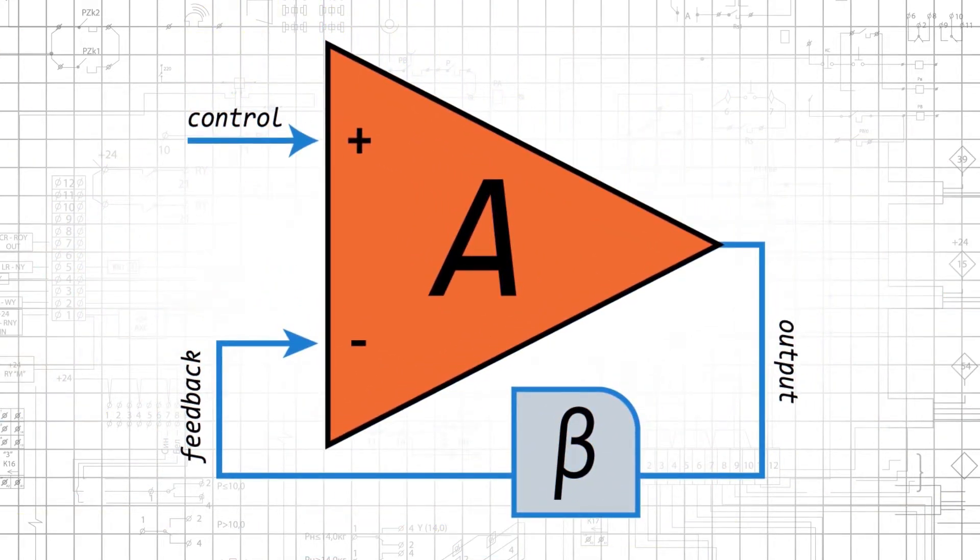Op-amps make it very easy for us to create high-performance negative feedback amplifier systems. Subtraction is achieved by connecting the feedback signal to the inverting input terminal, and the op-amp's extremely high gain allows us to use the simplified calculation.